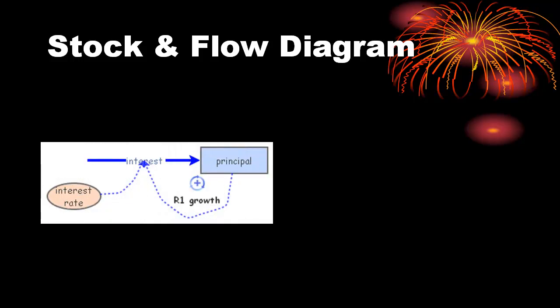This stock and flow diagram represents the growth causal loop diagram in the previous slide. What is explicitly different in this diagram is that a stock is only allowed to change via a flow that adds to or subtracts from the stock.